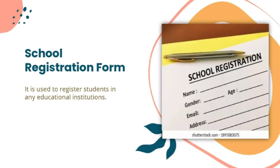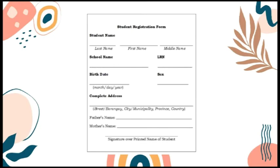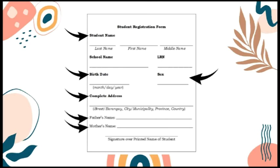The first one is the school registration form. It is used to register students in any educational institution. This form contains the name of the student, his or her birth date, sex, complete address, and the name of both parents or guardian. It also has the name of the school and the student's LRN, or Learning Reference Number.